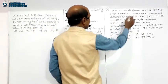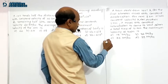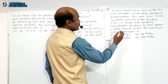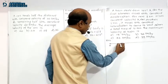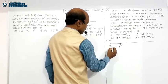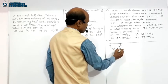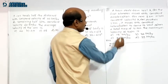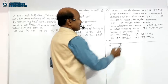A train starts from rest — rest means initial velocity is 0. For the first kilometer, suppose A to B, let displacement S1 equal to 1 kilometer. There is constant acceleration, meaning velocity is increasing.